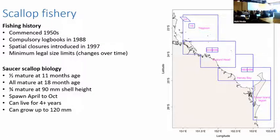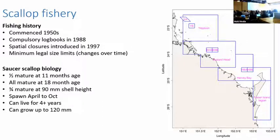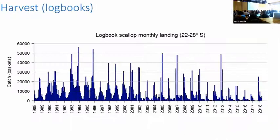We also have information about mesh and legal size that may have changed over time, and we want to include this in the models. The model for the FRDC project covers these 10 areas, and we want to see whether we can use Stock Synthesis to handle them. Scallop maximum age is about 4 years old and they can grow up to 120 millimeters. The spawning season is from April to October.